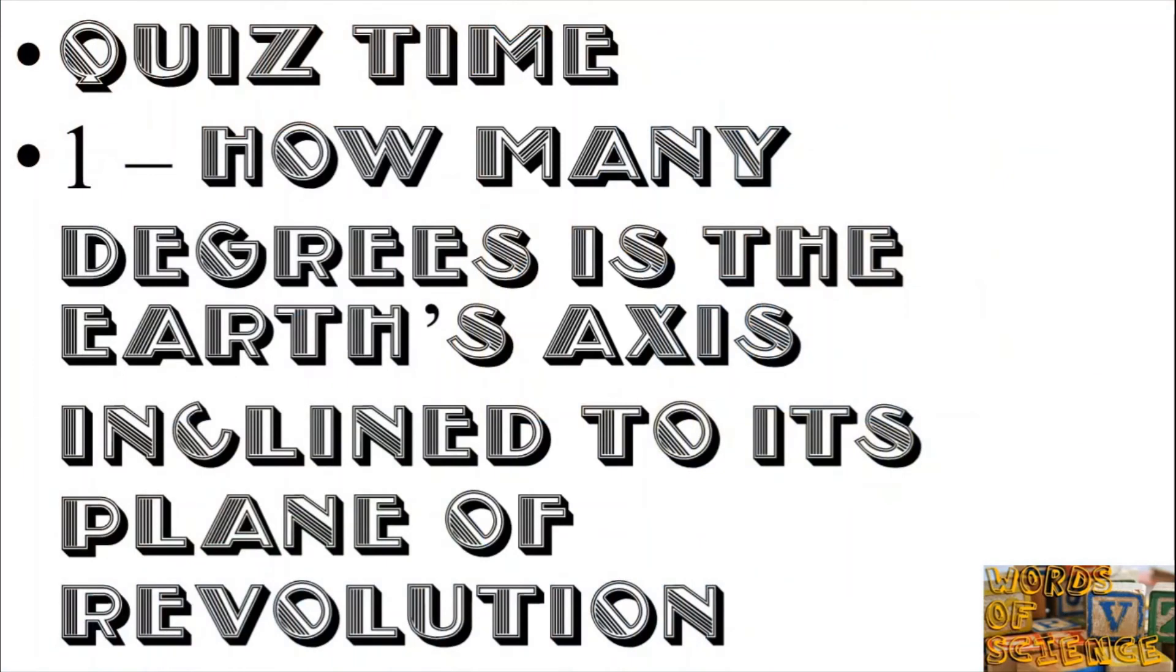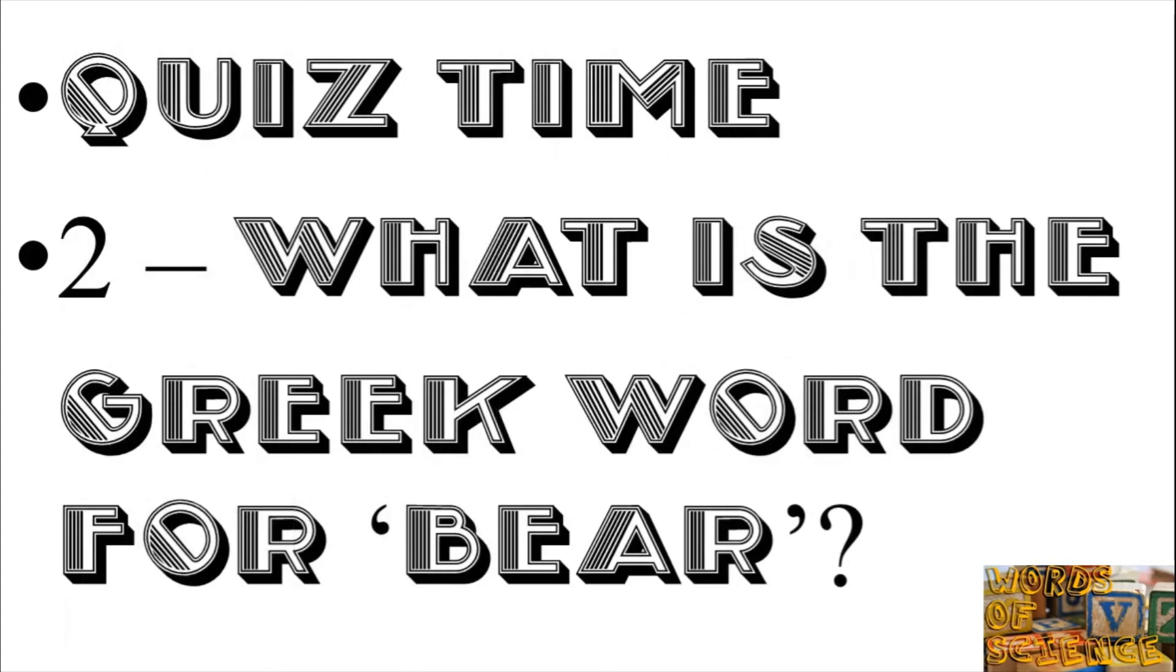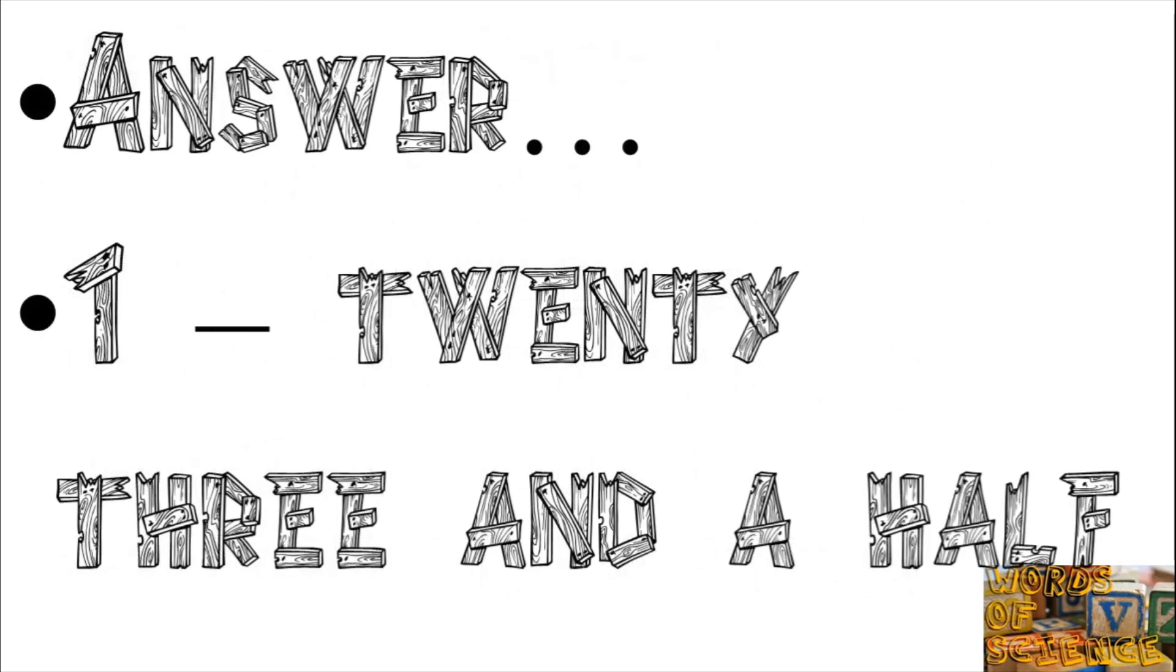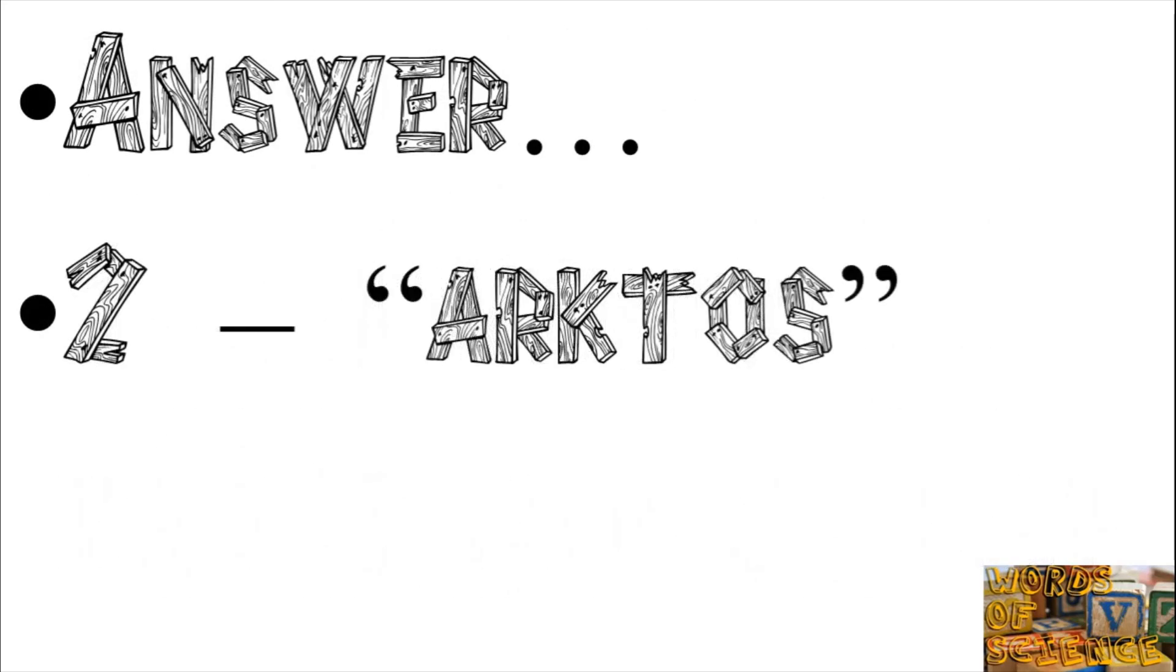And now it's time for a quiz. Question number one: How many degrees is the Earth's axis inclined to its plane of revolution? Question number two: What is the Greek word for bear? And question number three: Which bright star keeps guard over the Great Bear constellation? And your answers are: for question number one, 23 and a half degrees; question number two, Arctos; and question number three, Arcturus.